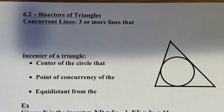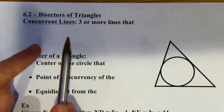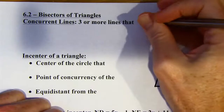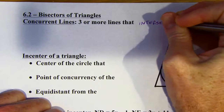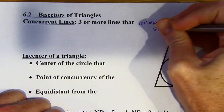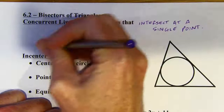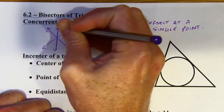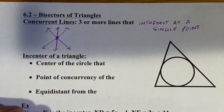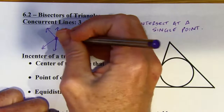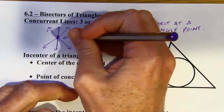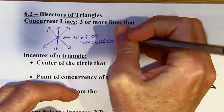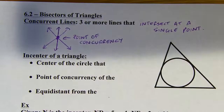We've got bisectors of triangles. We're starting off with a definition: concurrent lines. They are three or more lines that intersect at a single point. If we've got three or more lines, none of them are going to be parallel — they're all going to be on the same plane. So these three lines that I'm sketching here all intersect at that single point, and those would be concurrent lines. You could call the point where they intersect the point of concurrency. A large part of this chapter is going to deal with different types of points of concurrency.